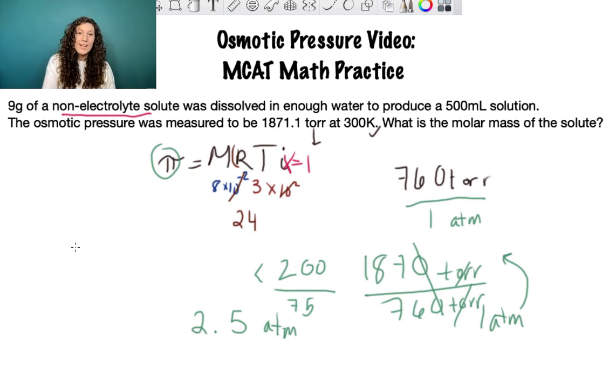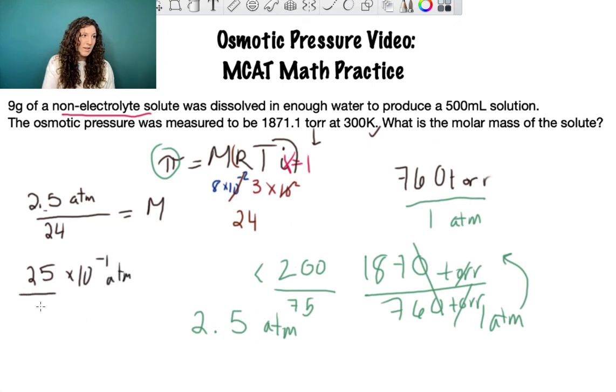Our next step is to isolate molarity, which will help us determine the molar mass of the solute. We have 2.5 atmospheres as our osmotic pressure, and we'll divide that by 24, which is our combination of RTi, and that gives us our molarity value. 2.5 divided by 24, these numbers are really close together so let's make them the same. 2.5 becomes 25 times 10^-1 atmospheres, and 24 becomes 25 with a slight rounding up, and that resolves to 1 times 10^-1 or 0.1 molar.